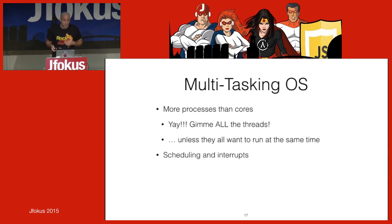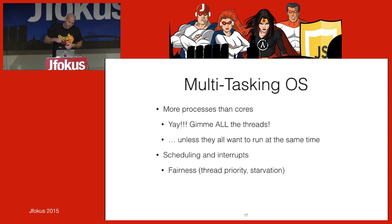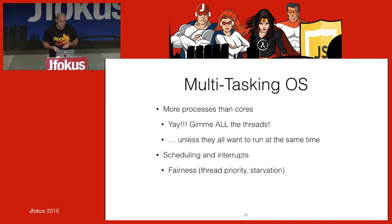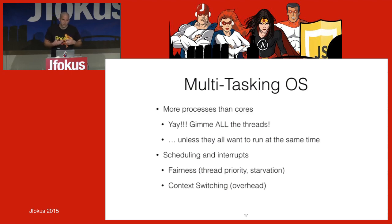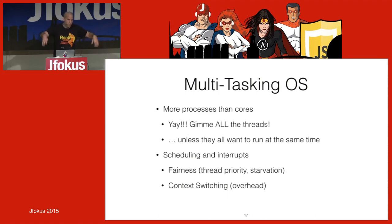We need scheduling and interrupts to swap threads on and off cores. This leads to fairness concerns — the OS tries not to starve threads, and you have thread priorities to play with. Context switching has a cost: not only do you execute code to bring in the other thread, you also have to load all its context — like sitting at a desk, arranging your laptop and coffee before you can start working.